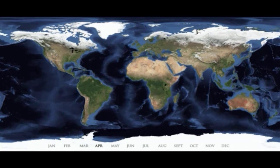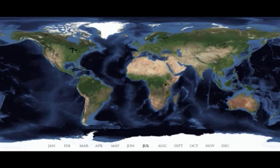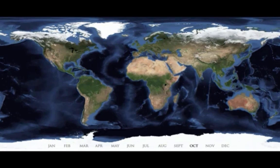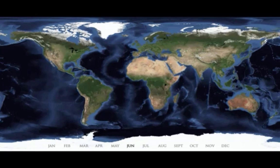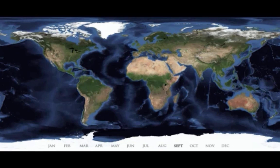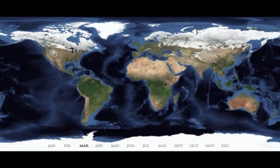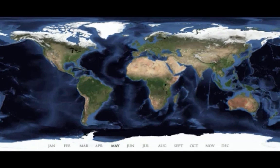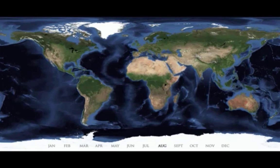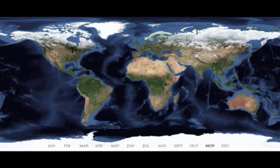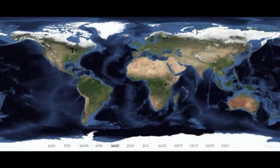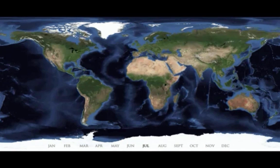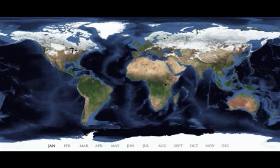Here you see a time-lapse video of the Earth as the seasons progress. Notice how the snow and ice encroach across the Earth in the north during the winter months. Also notice how the green lands expand further south in the winter months, especially in the tropics.